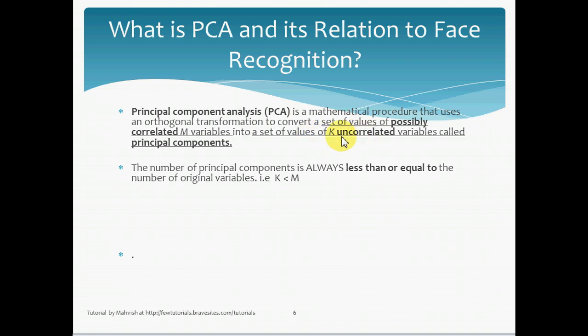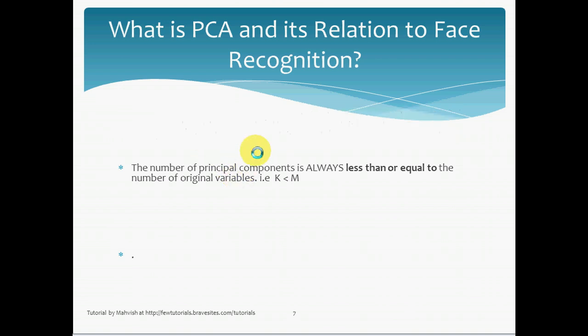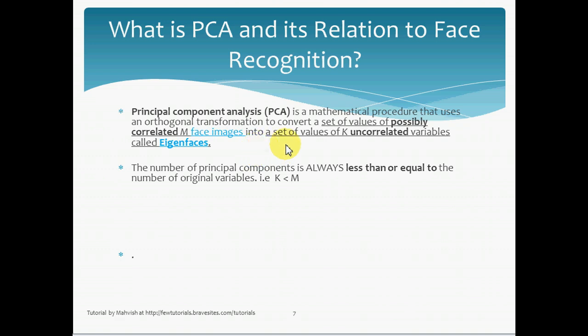And these K uncorrelated variables, called the principal components, these are actually the lower dimensional picture I just showed you earlier. That is the eigenfaces. So, if I replace variables with images and principal components with eigenface, we get a better understandable definition of PCA in relation to face recognition.